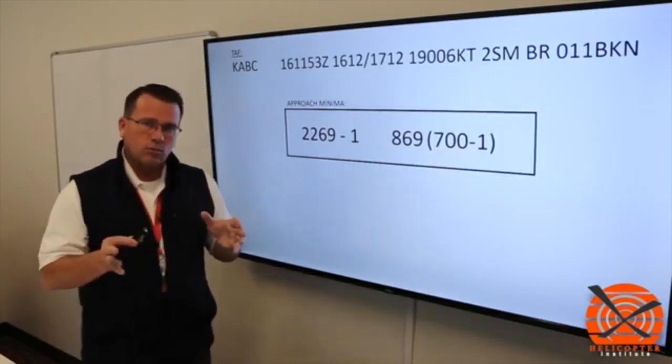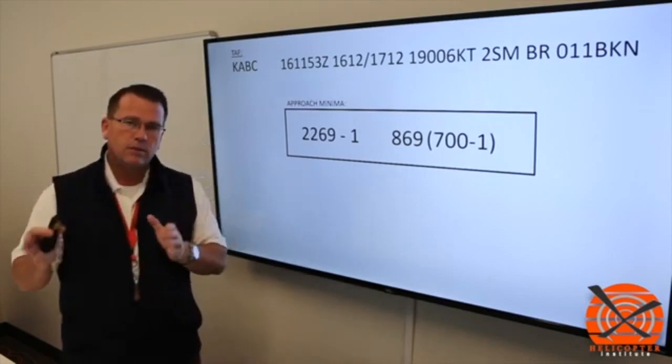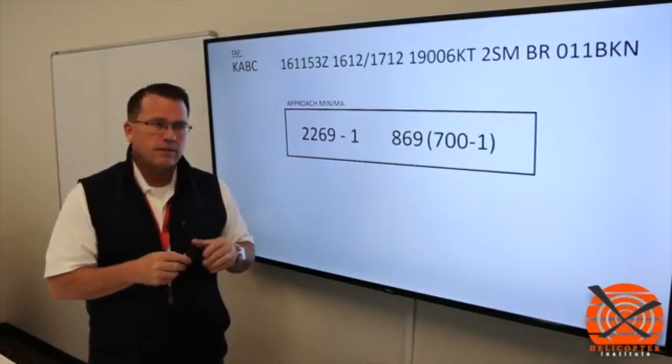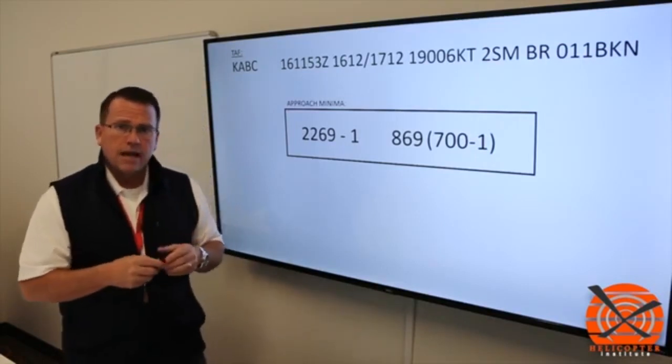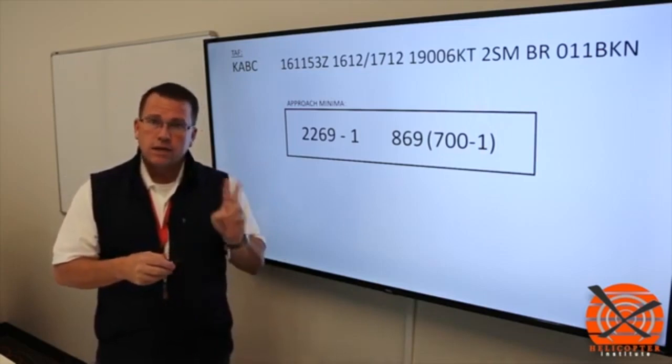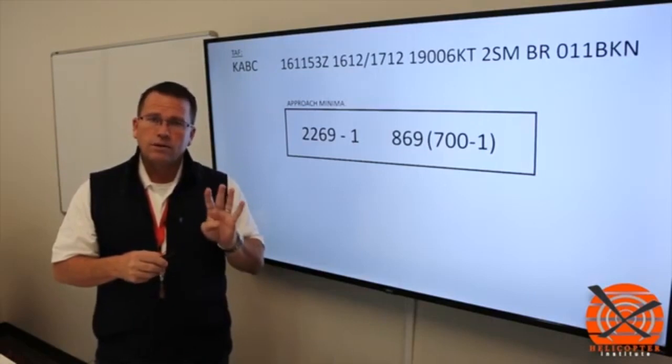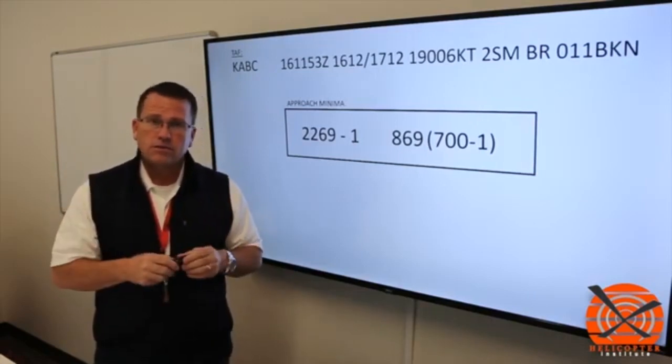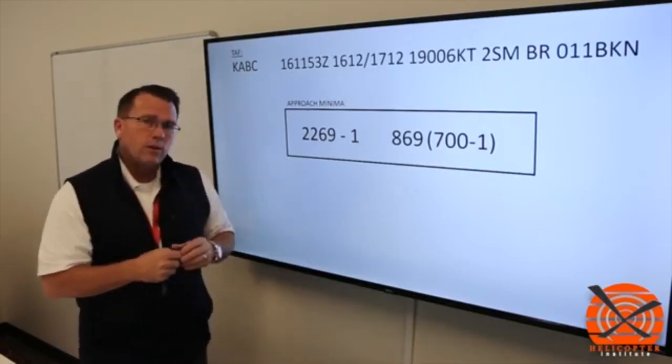So to apply that rule, we have to then look at the approach plate depending upon if it's 91.167 or 91.169. And 91.167, that's the primary airport, and we have some rules associated with that. One is that at our ETA and one hour after, we have to have at least two statute miles visibility. And on our ceilings, we have to have at least 400 feet above the lowest applicable approach or 1,000 foot ceilings over airport elevation.